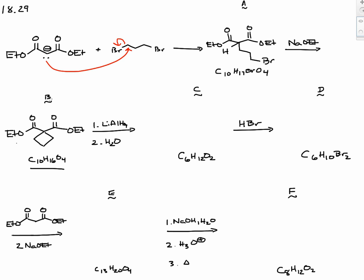In the conversion from B to C, we're treating with lithium aluminum hydride and then doing an aqueous workup. Looking at the change in molecular formula, we're going down by two oxygens. So this is going to be a reduction — we're going to reduce the esters down to primary alcohols. The cyclobutane ring is not going to change.